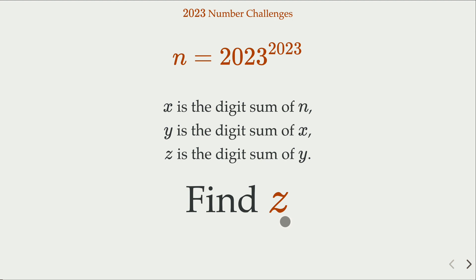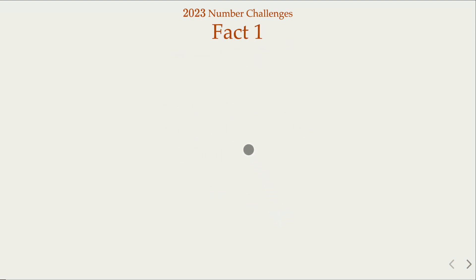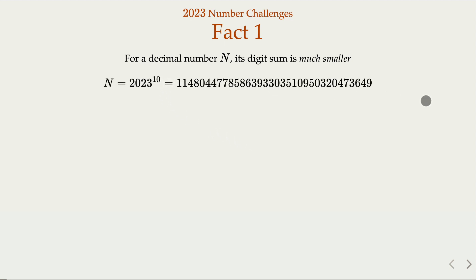We look at a few things first for digit sum of big numbers. Usually it's much smaller than the number itself. For example, if I calculate 2023 raised to 10th power, it's gonna be this huge number here. And when we calculate digit sum, it's only 142, much smaller.